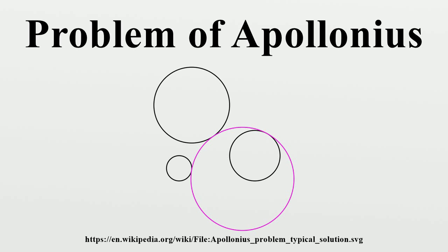Hence, if a given circle is already tangent to the other two given objects, it is counted as a solution to Apollonius' problem. Two distinct geometrical objects are said to intersect if they have a point in common. By definition, a point is tangent to a circle or a line if it intersects them, that is, if it lies on them. Thus, two distinct points cannot be tangent.